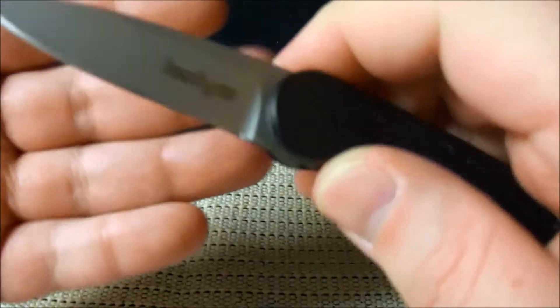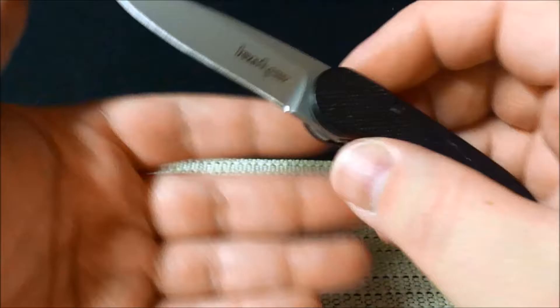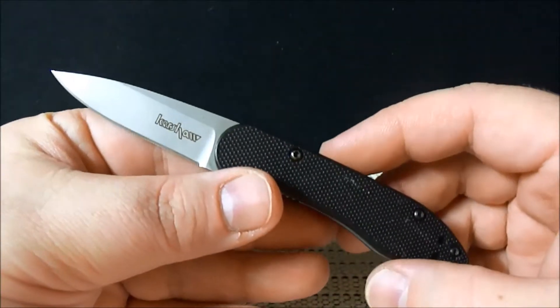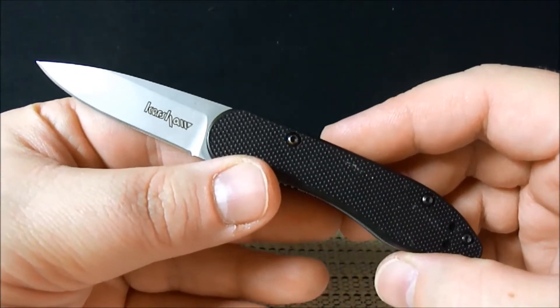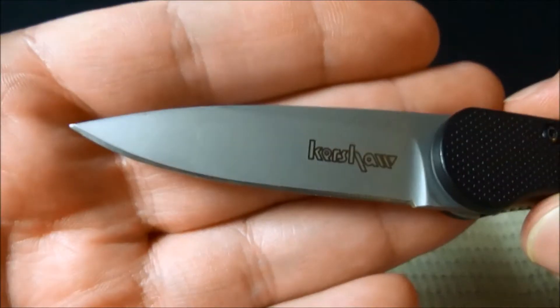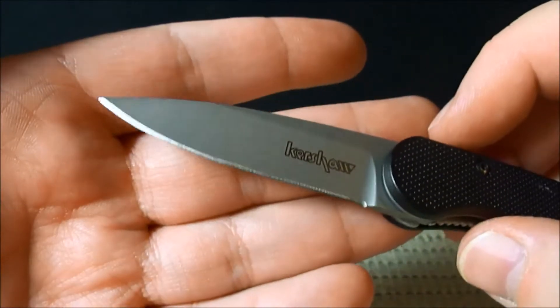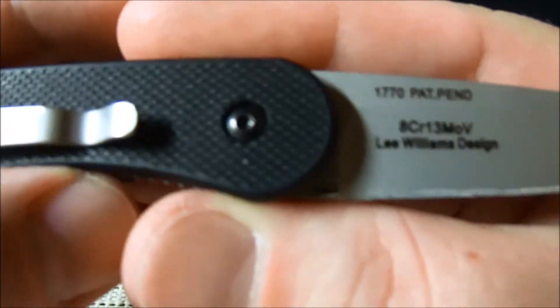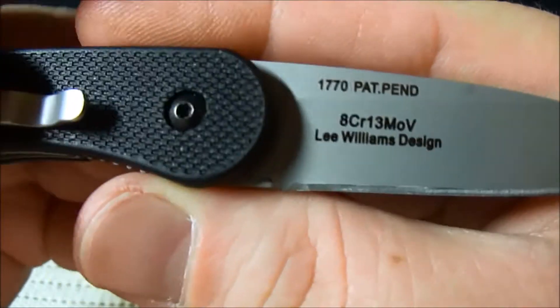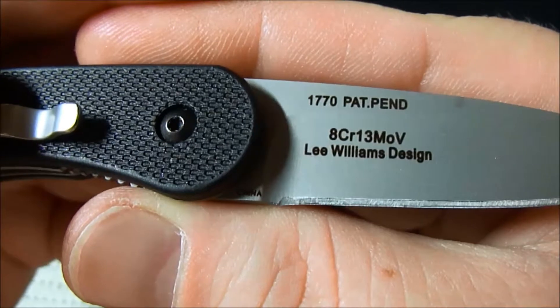It is a flipper. Let's go ahead and get some specs out of the way. The overall length is 5.34 inches. The blade is two and a quarter inches. It is 8CR13MOV. It says right there the model number 1770. Lee Williams design.